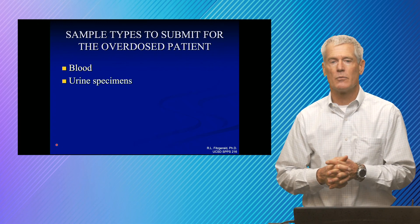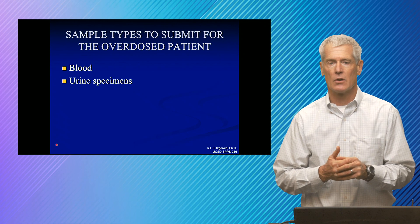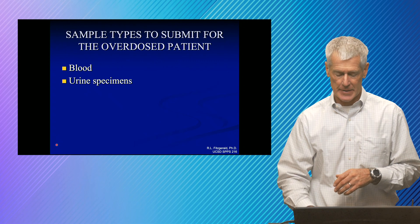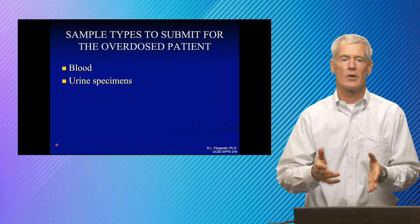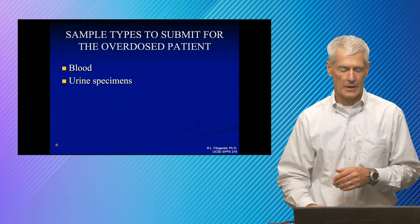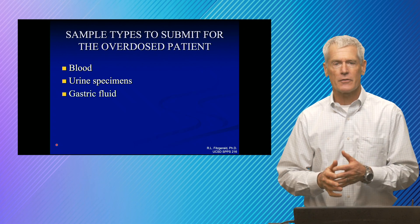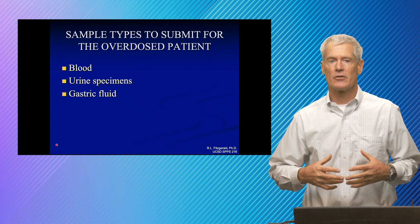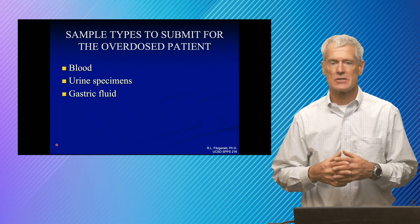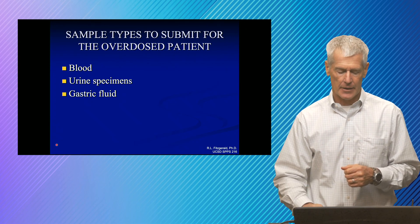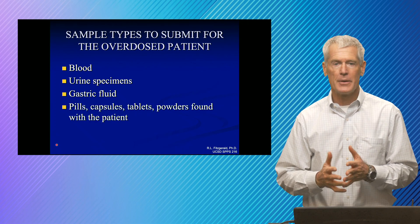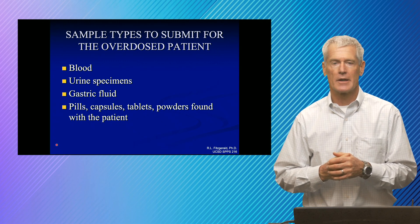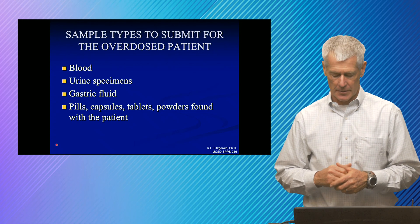Urine specimens are often used when we're looking for a longer window of detection. For drugs of abuse, we want to be able to pick up people for days or weeks. Urine is where drugs typically get concentrated and excreted, and thus where we can find either metabolites or parent drug. Gastric fluid can be useful in an acute overdose when we don't know what it is — gastric contents might have really high concentrations, helping us identify the drug. Pills, capsules, and tablets, especially in forensic cases, also become important because they help direct our search.